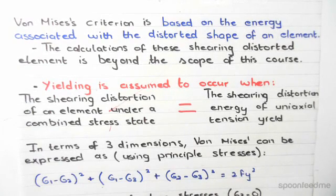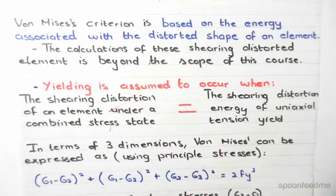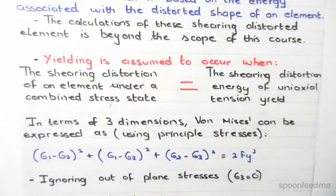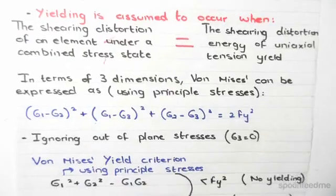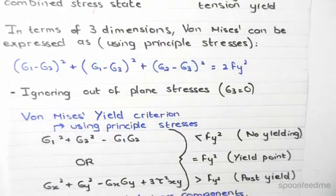But previously as I've explained we only worry about two dimensional in-plane stresses in this course so we can eliminate and take out the third principal stress from this equation. So von Mises criterion, yield criterion, becomes this.